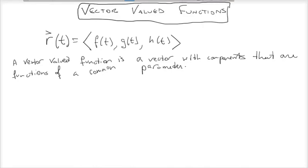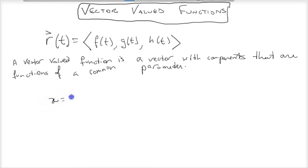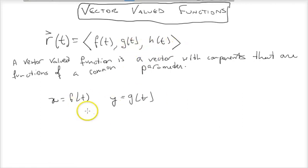Vector-valued functions are not terribly complicated. They come in this form — all they are is a vector, the components of which, instead of being constants or numbers, are functions of some same parameter. A vector-valued function is essentially the parametric equations we were dealing with in single-variable calculus, where x equals some f of t and y equals some g of t. A vector-valued function is that, expressed as a vector-valued function of f of t, g of t.